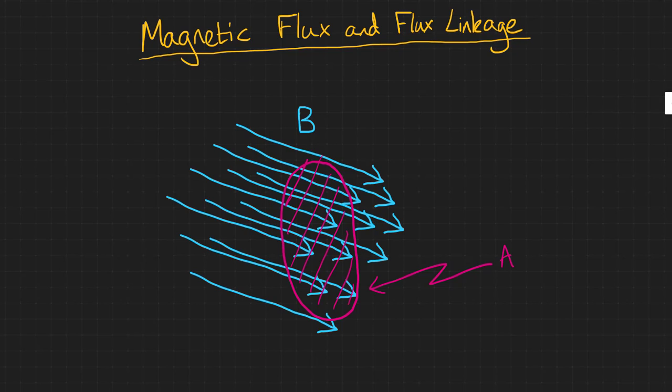So it follows that if we multiply a magnetic flux density by a particular area, it will tell us how much magnetic flux we have in that particular area. We use the Greek symbol phi to represent magnetic flux.